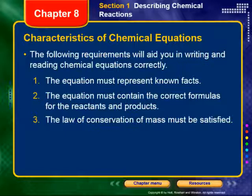Moving on to the characteristics of chemical equations, these are the three characteristics of a correctly written chemical equation. Number one: the equation must represent known facts. When you're writing an equation for a reaction, you can't write it unless you know everything that is involved in that reaction.